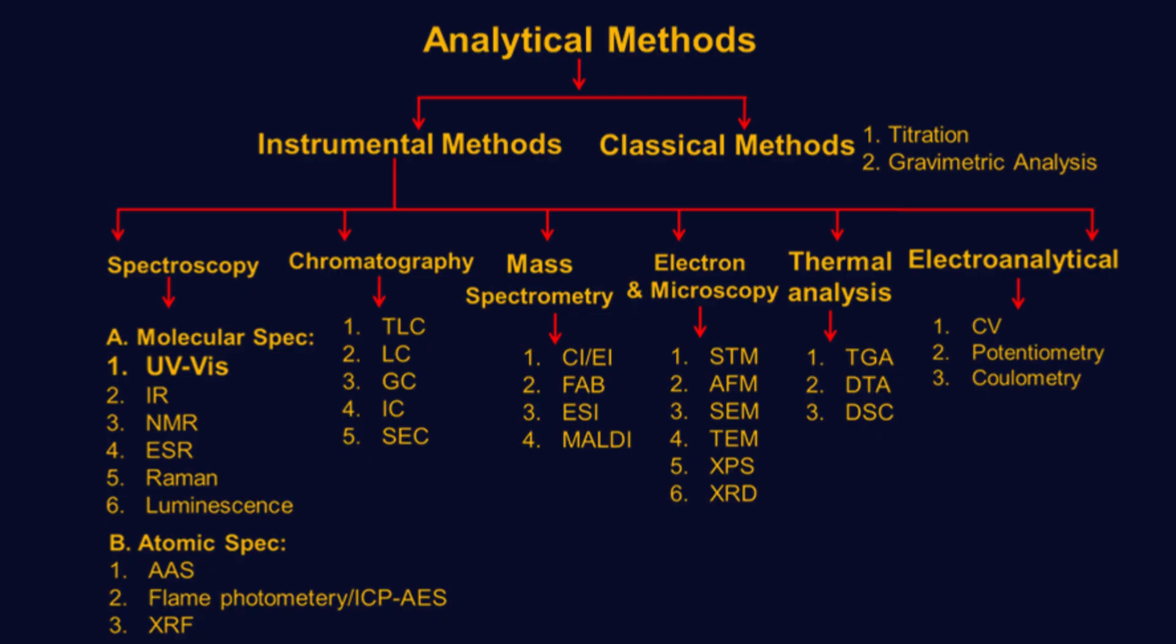Instrumental methods, on the other hand, use advanced instruments to identify and quantify chemical species. These methods are further categorized into several major types. First, spectroscopy, which includes molecular and atomic spectroscopy.